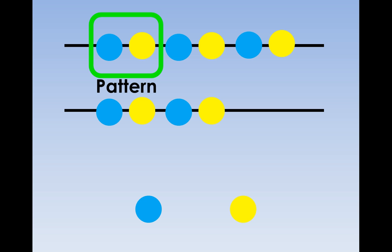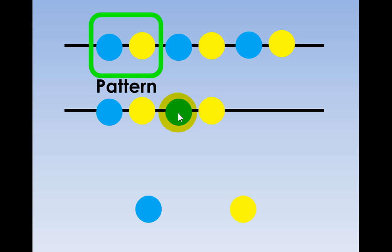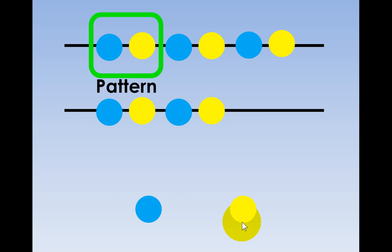Let's copy this pattern. All we need to do is choose a blue bead, then a yellow bead. Can you see the pattern? Let's look at the pattern below. It starts with a blue bead, then a yellow bead, then a blue bead, then a yellow bead. What do you think the next color bead will be — blue or yellow?